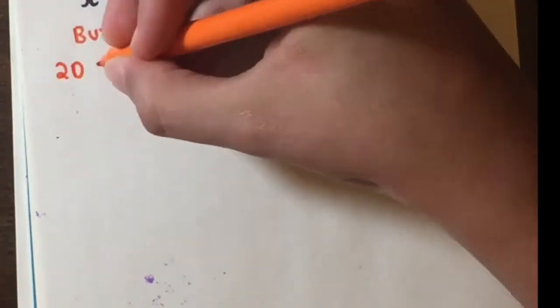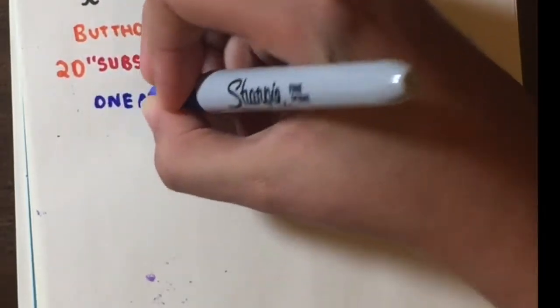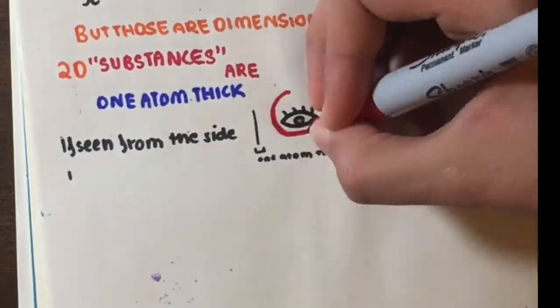In this case, we are talking about substances which are 1 atom thick. If you see it from the side, it's virtually invisible. This can be seen from the top too.